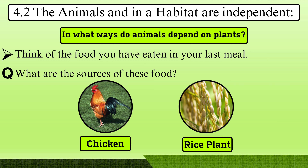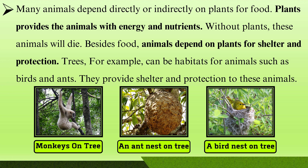The animals in the habitat are interdependent. In what ways do animals depend on plants? Think of the food you have eaten in your last meal. What are the sources of these foods? Chicken? Rice plant? Many animals depend directly or indirectly on plants for food. Plants provide animals with energy and nutrients. Without plants, these animals will die.